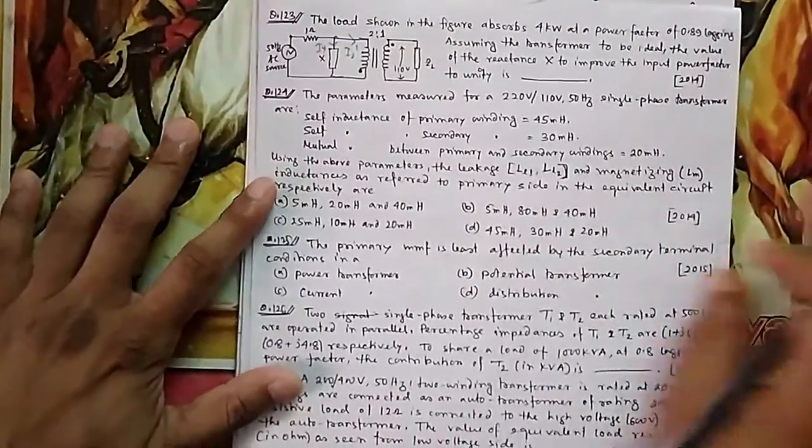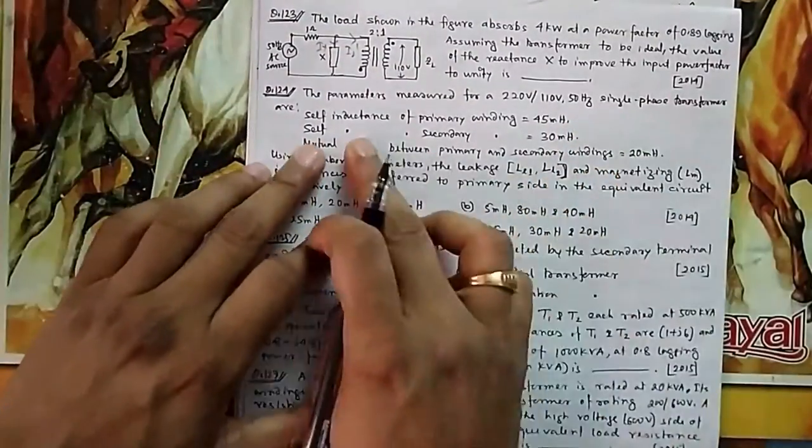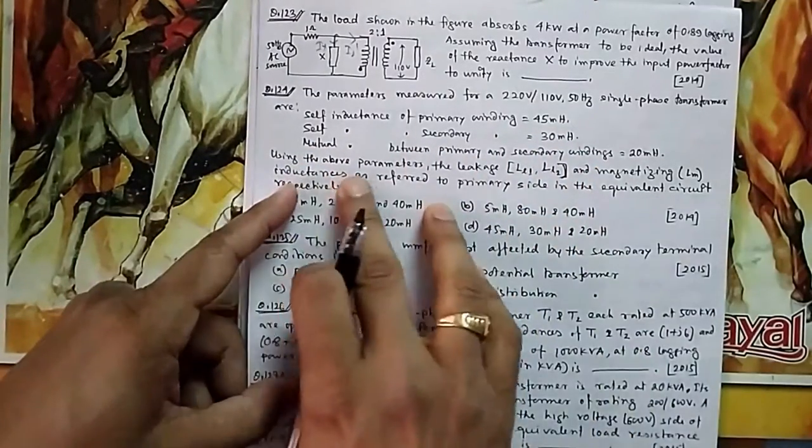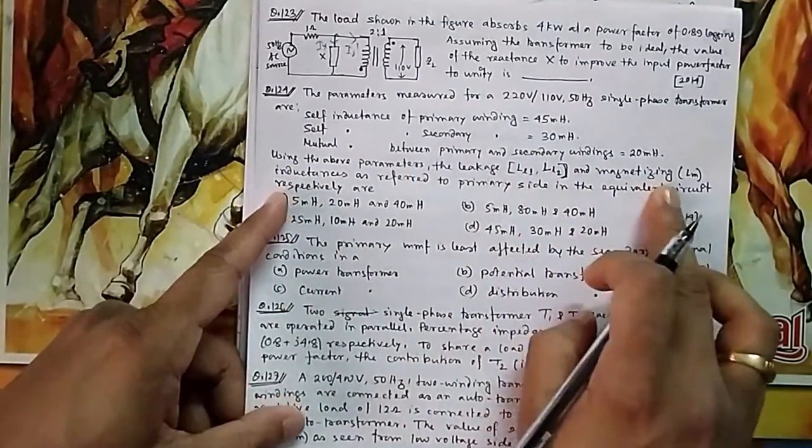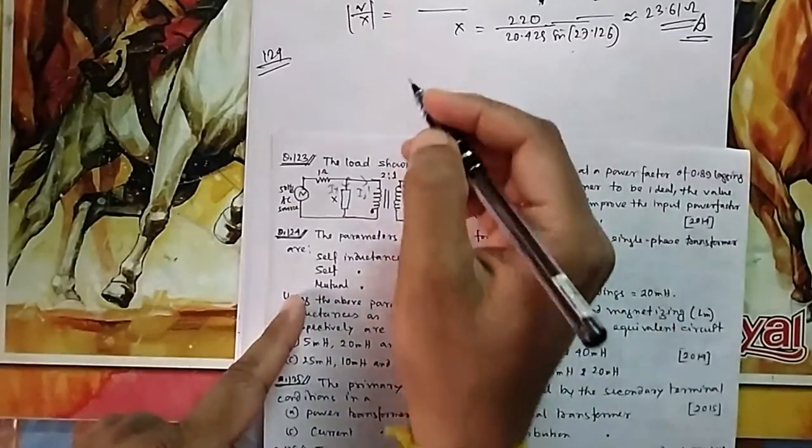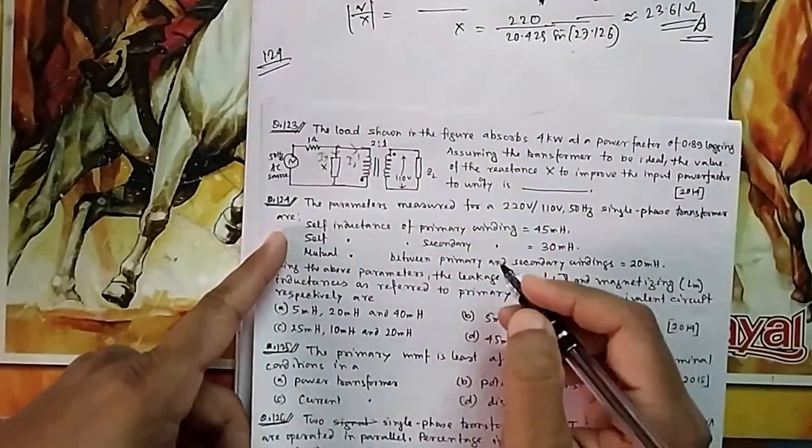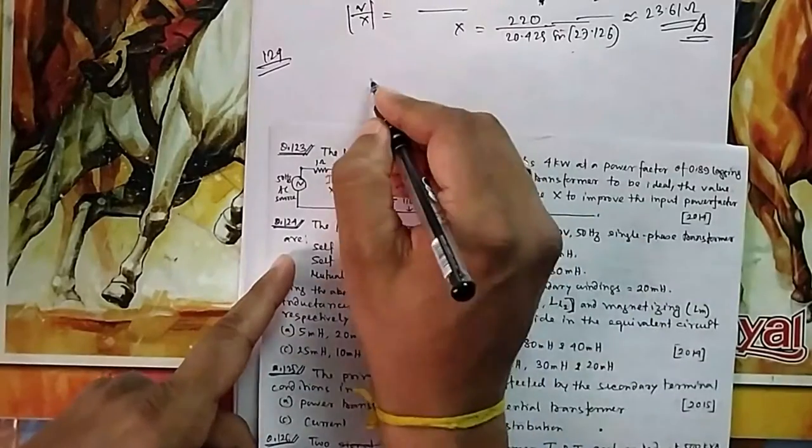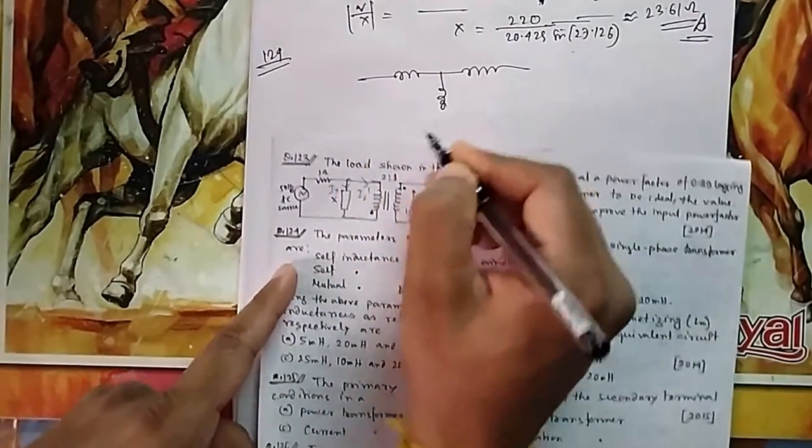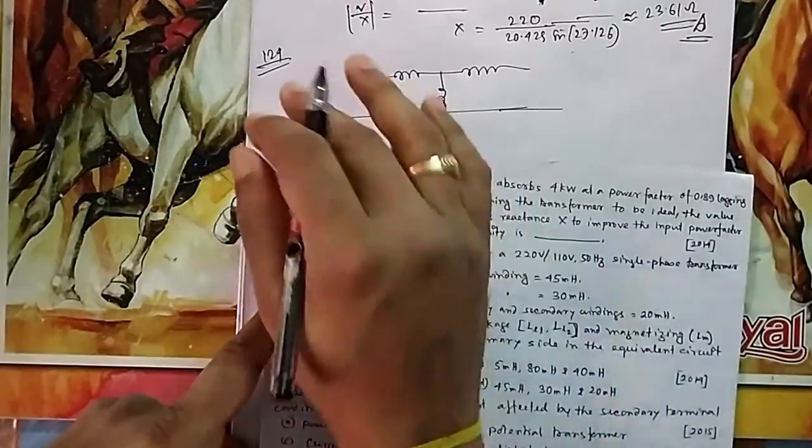Next, question 124: The parameters measured in a 220 by 110 single-phase transformer are self-inductance primary, self-inductance secondary, mutual inductance. Using the above parameters, leakage L1, L2, and magnetizing inductance as referred to primary side of the equivalent circuit. I think you know this primary side conversion of this coupling capacitor, coupling inductor. It will be of this fashion. In inductors also we have - I think I have discussed this one - coupled inductor referred to one side.